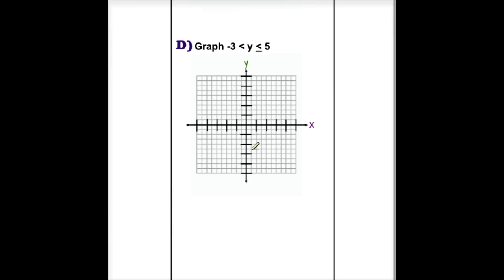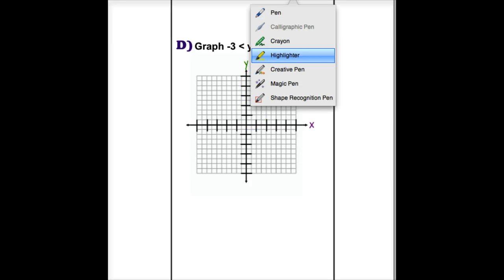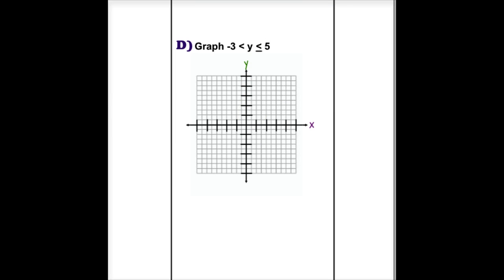Next one. Now we've got y, -3 is less than y is less than or equal to 5. So our first one, we take this -3 is less than y, and when I see y is greater than -3, I know that that is a dashed line, and it's going to be horizontal because it's y, and it has to go through the y-axis.